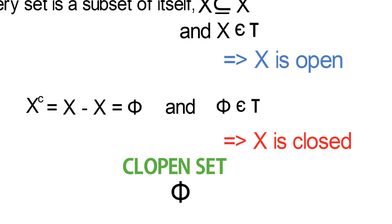Another example is the empty set. The empty set is also a clopen set because it is a member of τ, and its complement is the set X, which is a member of τ.